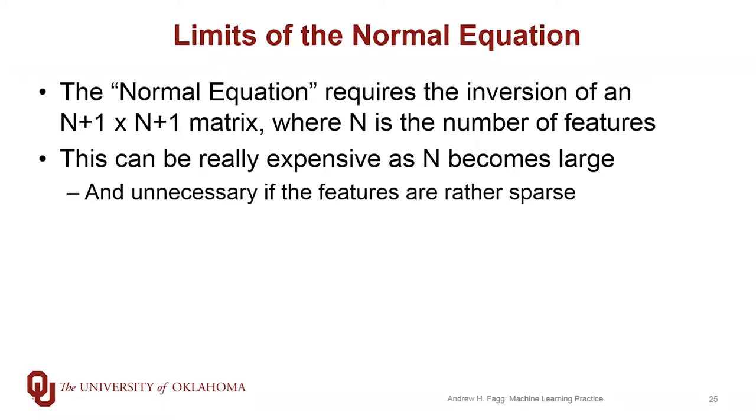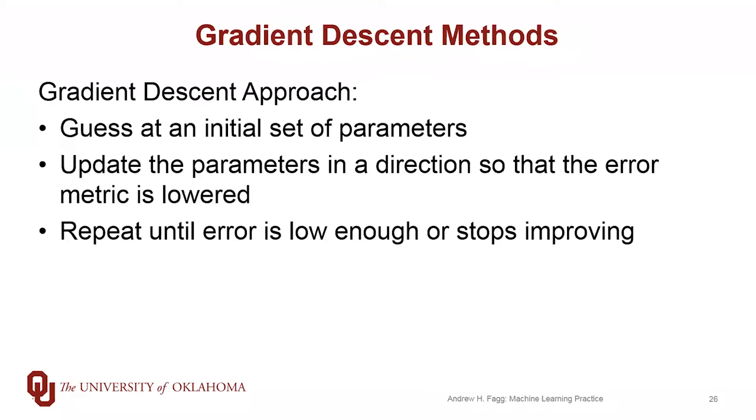So an alternative to solving for the parameter set is something called gradient descent. It doesn't have the same problem of having to invert a large matrix, but it does require us to step through the problem space,